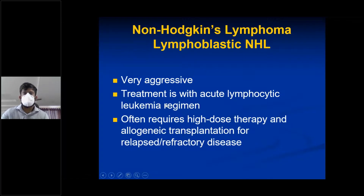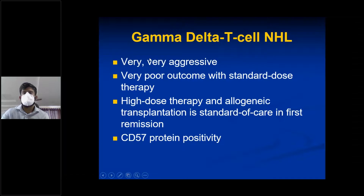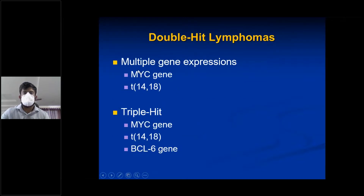Lymphoblastic NHL is very aggressive; treatment uses the acute lymphocytic leukemia regimen. It often requires high-dose therapy and allogeneic transplantation for relapsed or refractory disease in younger patients. Gamma-delta T-cell NHL is very aggressive with very poor outcome on standard-dose therapy; high-dose therapy and allogeneic transplantation are the standard of care. Double-hit lymphomas involve MYC gene translocation plus t(14;18); triple-hit adds BCL6 gene.